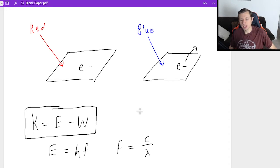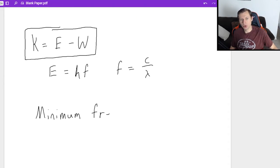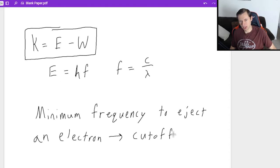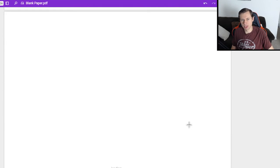And one more thing I will say, the minimum frequency to eject an electron is known as the cutoff frequency. In other words, if the frequency is any lower, any lower energy, then you're not going to eject electrons. Any higher and electrons start flying off. So now let's look at some examples.